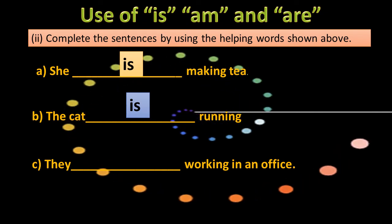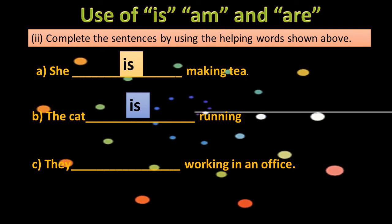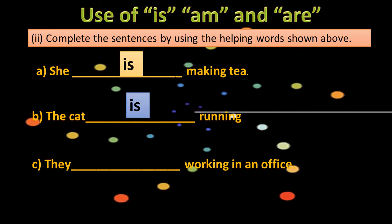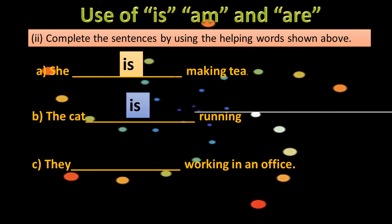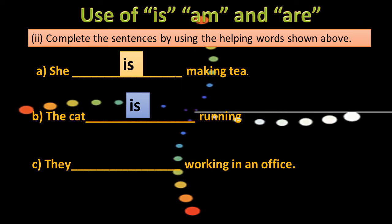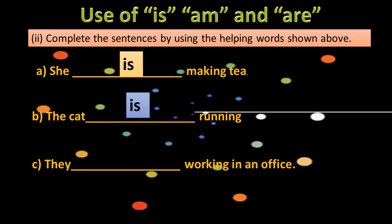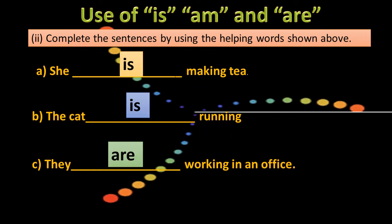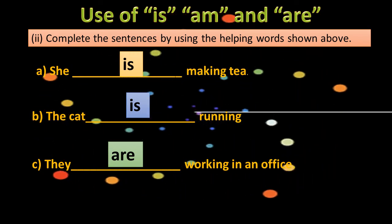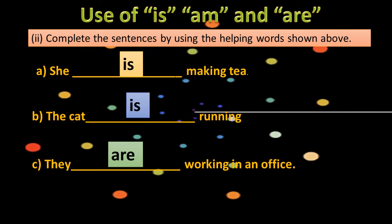Next sentence: They dash working in an office. Yahan 'they' ka istemal ho raha hai to is ka matlab yahan ek se zyada logon ke bare mein baat ki ja rahi hai. Aur jab ek se zyada logon ke bare mein baat ki jati hai to kya aata hai? 'Am' nahi, 'is' nahi, to phir kya aata hai? Ji, 'are' aata hai. They are working in an office.